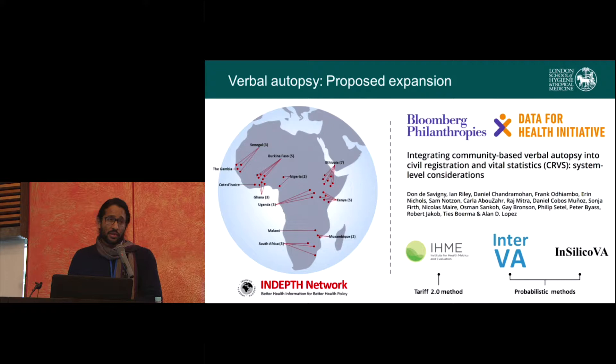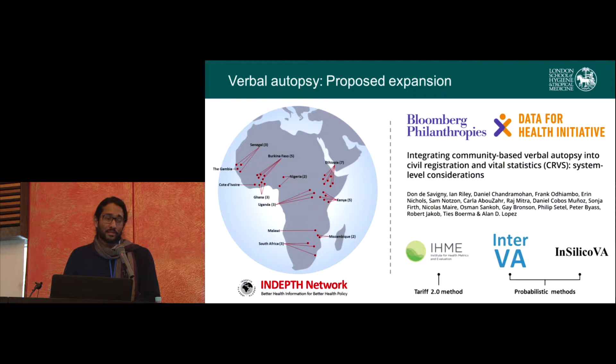In principle, this is a really good thing — we need better mortality data. They are the bedrock of so many of our health decisions, health economics, and funding allocation in terms of how we structure our health services. If we don't know what people are dying from, how do we plan for what to treat them for? However, VA hasn't necessarily been tested very well for HIV-related mortality specifically, and in many of the countries where this system is due to be rolled out, HIV plays a major part in the mortality burden.